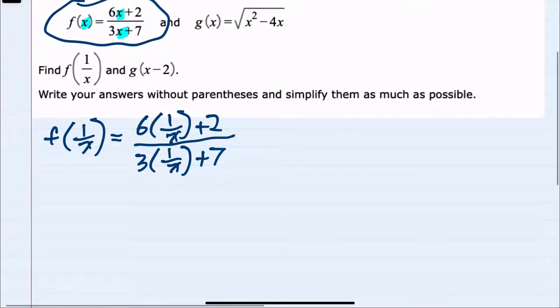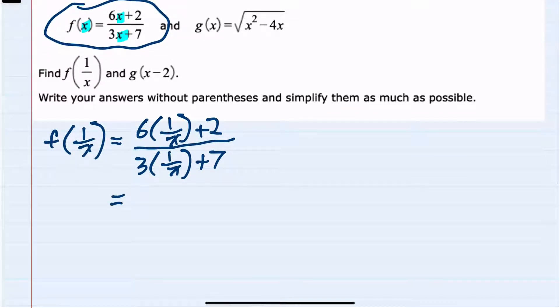Continuing to simplify this, in the numerator 6 times 1 over x would be 6 over x plus 2, and in the denominator 3 times 1 over x would be 3 over x plus 7. And the one remaining thing we can do to simplify this is, since we have a complex fraction with fractions in the numerator and denominator, I can multiply the top and bottom by the least common denominator, which both of these denominators are x. So I can multiply the top by x and the bottom by x.